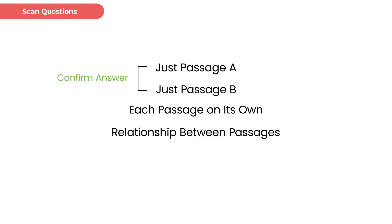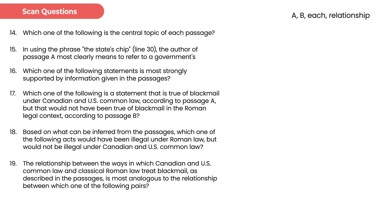If a question is asking which of these answer choices is supportable from each passage on its own, then we can eliminate anything that doesn't work for the passage we have read. Sometimes that gets you all the way to a correct answer, but usually it just knocks out two or three where it's pulling from the other passage and it sounds like an alien language. If the question is testing the relationship between them, we wouldn't touch it yet — we've got to wait until we've read both passages. Pause and think: is this testing me on just A, just B, each of them separately, or the relationship between them?